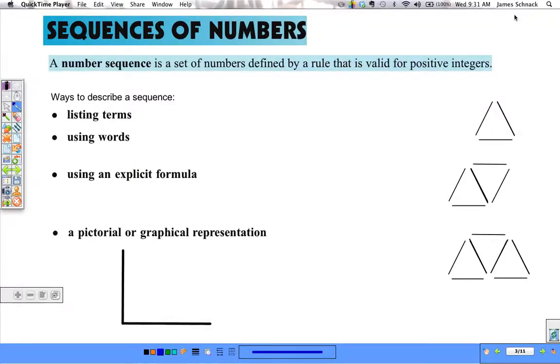We are going to look at some more sequences of numbers, and to reiterate this, or formalize it a little bit more, a number sequence is a set of numbers defined by a rule that is valid for positive integers. So we have this rule involving x or n or some variable, and it's valid for positive integers. That means we're allowed to put positive integers in. Well, that's a simple way of saying this is the domain, a set of all the inputs, positive integers.